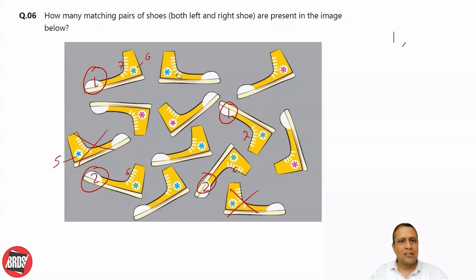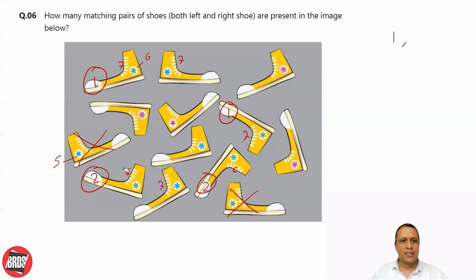Now let's consider this one - it has six petals and one, two, three, four, five, six, seven lines. Now in blue, I count seven lines as well: one, two, three, four, five, six, seven - right, seven is there. So this is the third pair.